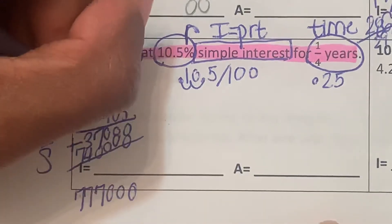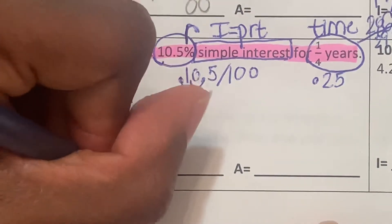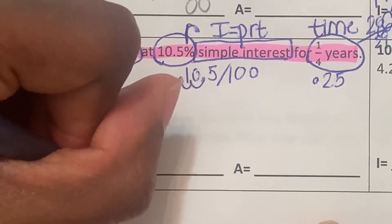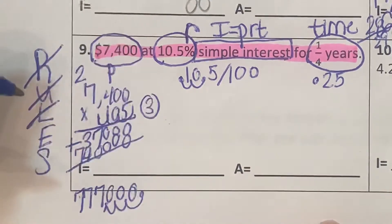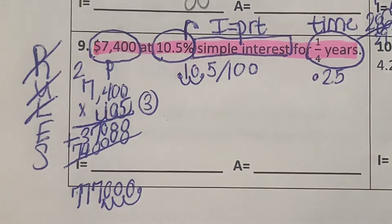Now how many numbers out to the right of the decimal place? We have one, two, three numbers to the right of the decimal place. So we're going to move our decimal here towards the left one, two, three spaces. So we're going to have $777.